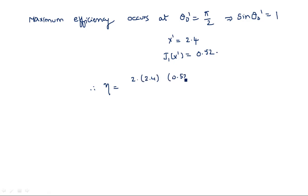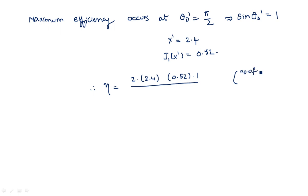Substituting: η = 2 × 2.4 × 0.52 × sin(θ0') / (2nπ − π/2), where sin(θ0') = 1. Here n represents the number of modes. Let us consider n = 2 as an example.